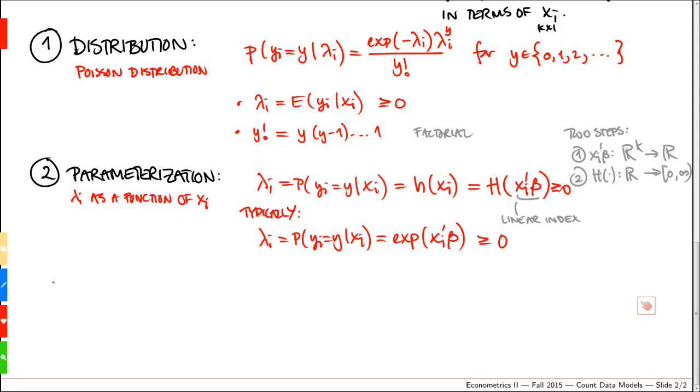So, together, these two steps give us the Poisson regression model.